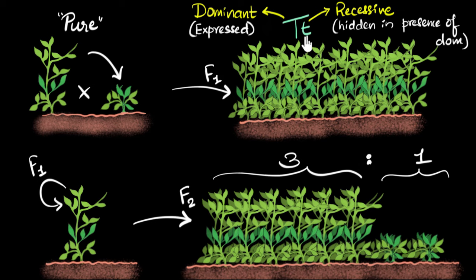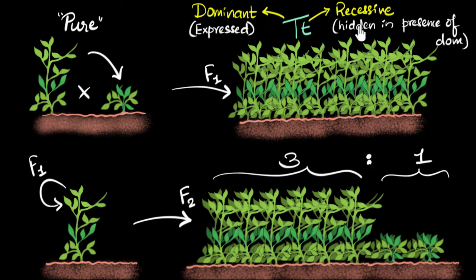To summarize: both traits are passed along — it's not a mix. It's just that one of them is dominant and that's what we see. The other trait is there, but it's hidden. In the presence of the dominant tall trait, the short trait gets hidden.